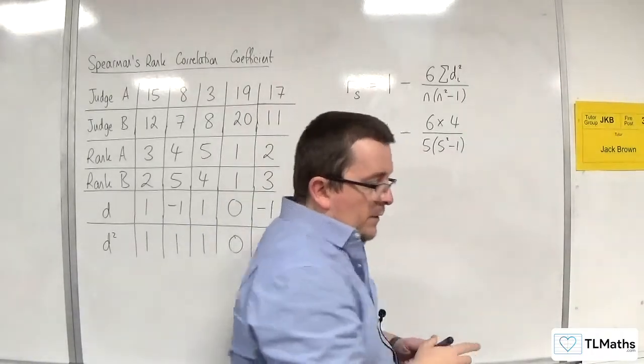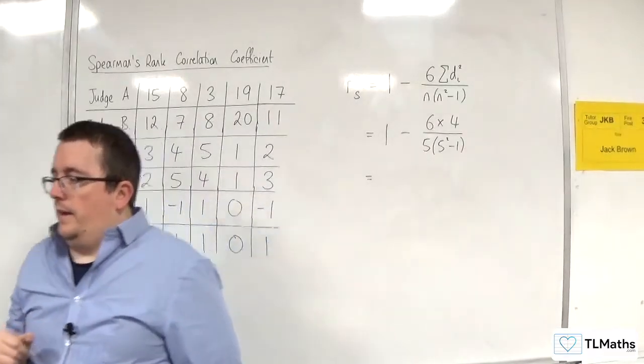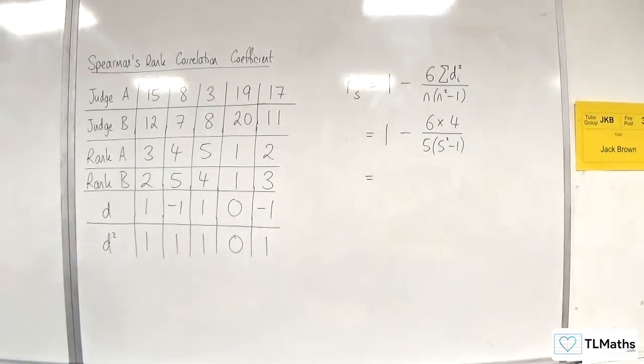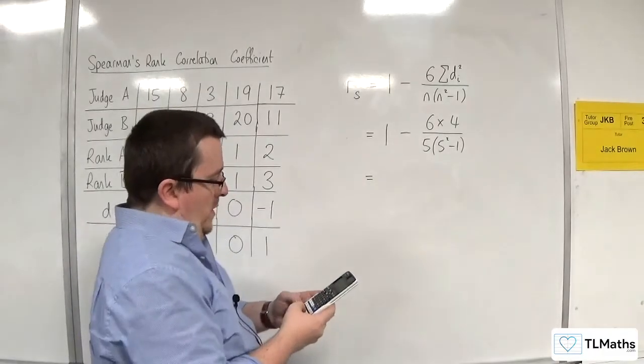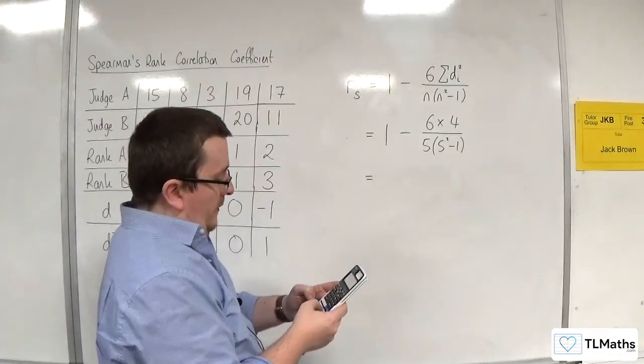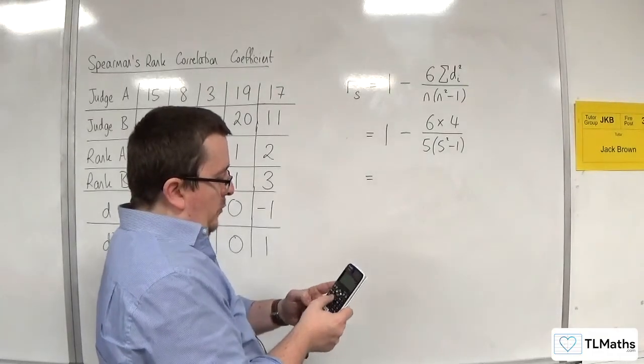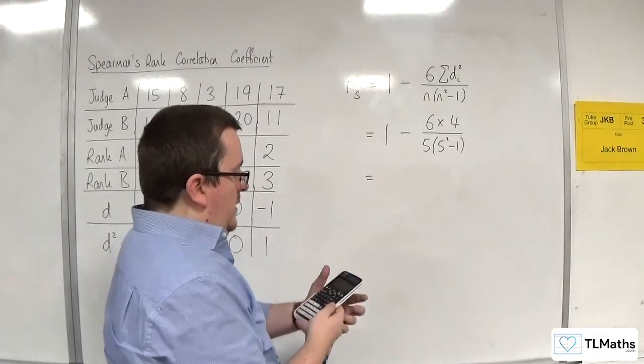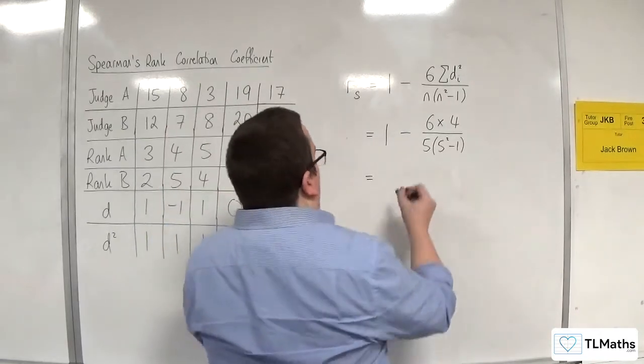So in our case, is 1 take away 6 times 4 over 5 times 5 squared, take away 1. We get 4 fifths, so 0.8.